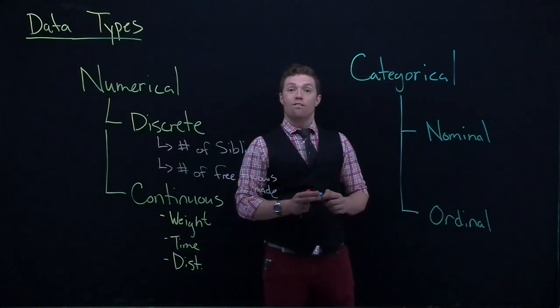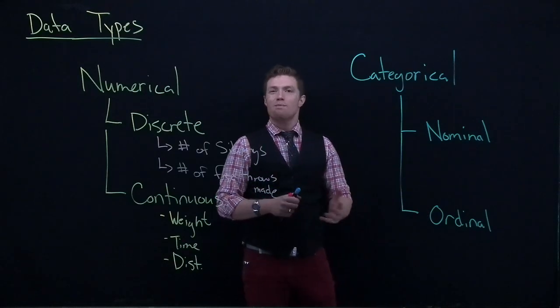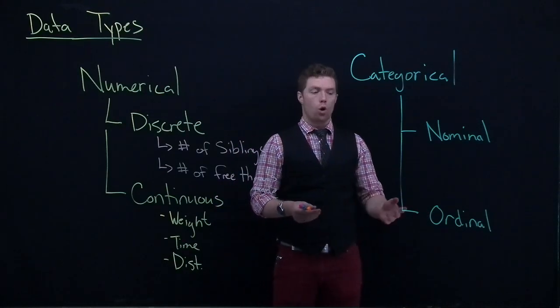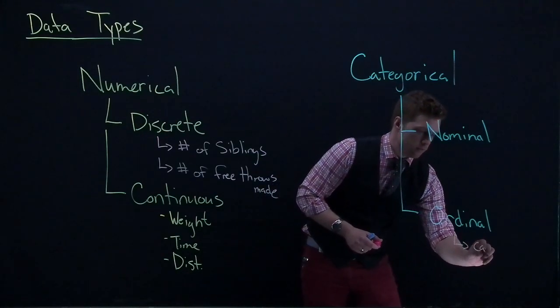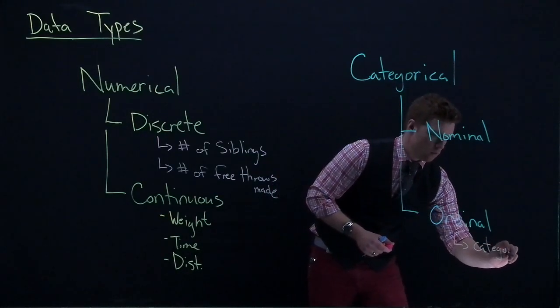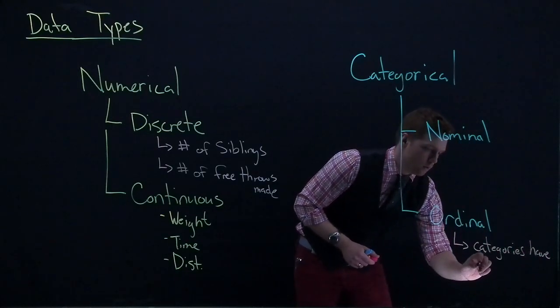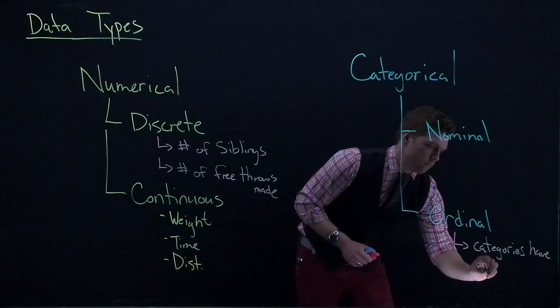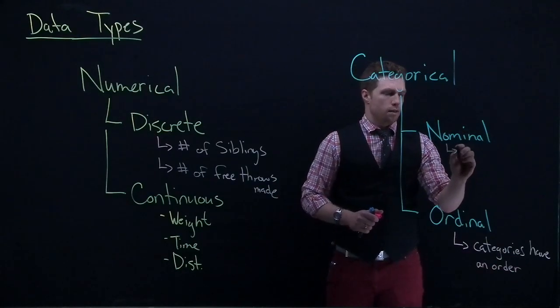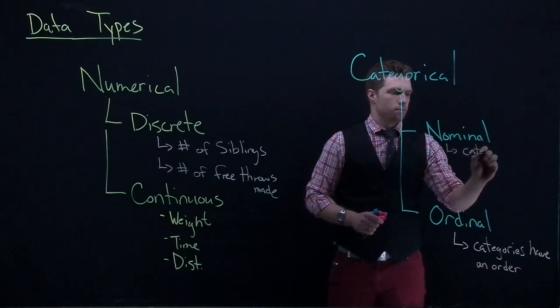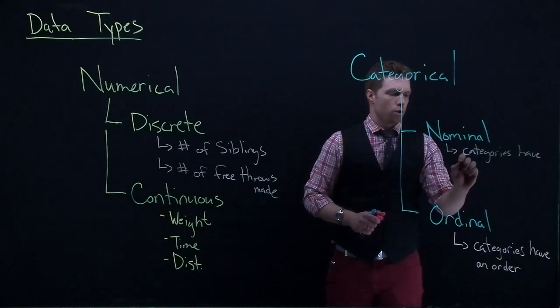For me, the easiest way to remember the difference between these two is to start off with ordinal, because the name gives us a clue. If we can think of the word order, this is that the categories have an order. For nominal, categories have no order.